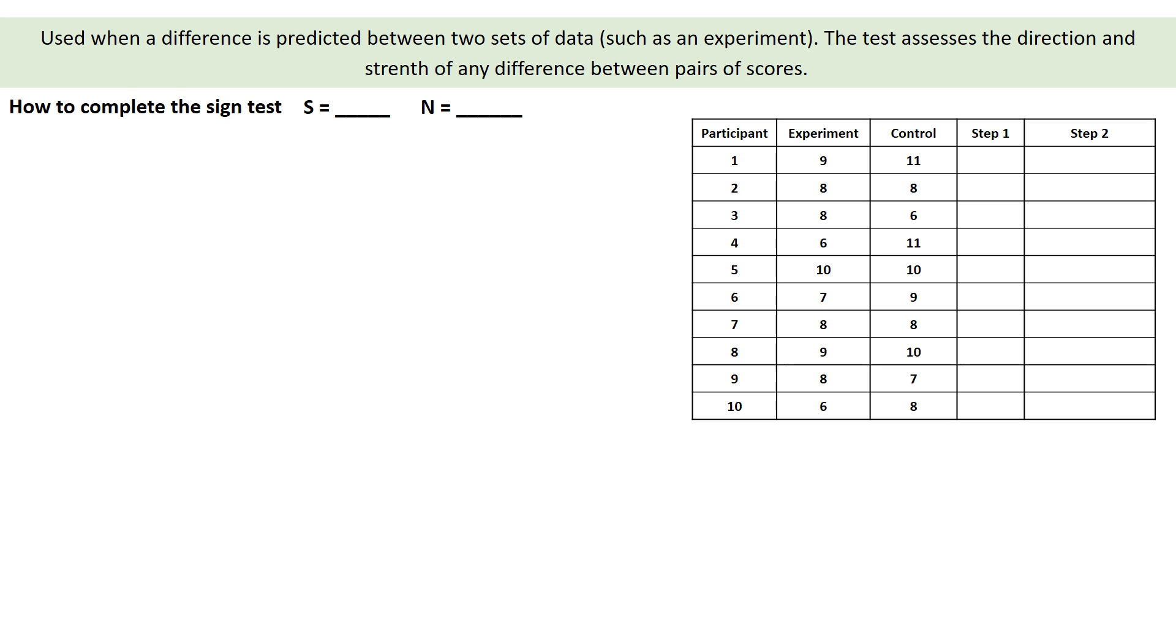This is a very easy test to complete. You just need to know the steps. We use a sign test when the difference is predicted between two sets of data, like an experiment. And this test looks at the direction of the difference and tells you also the strength of the difference between these sets of scores.